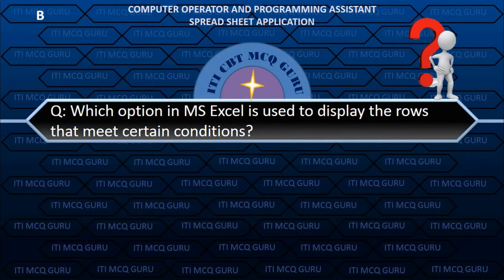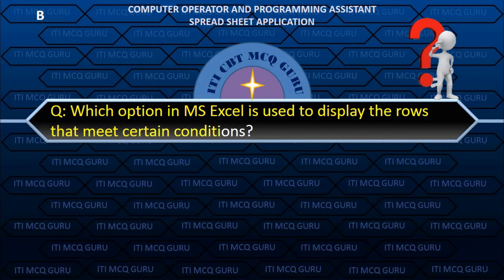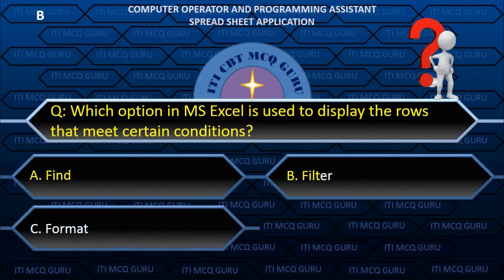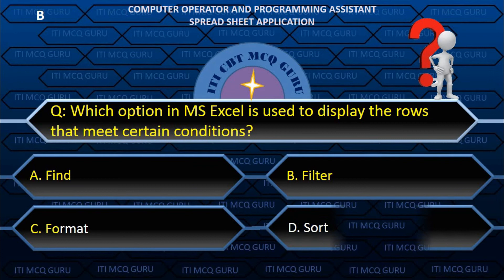Which option in MS Excel is used to display the rows that meet certain conditions? B. Filter.